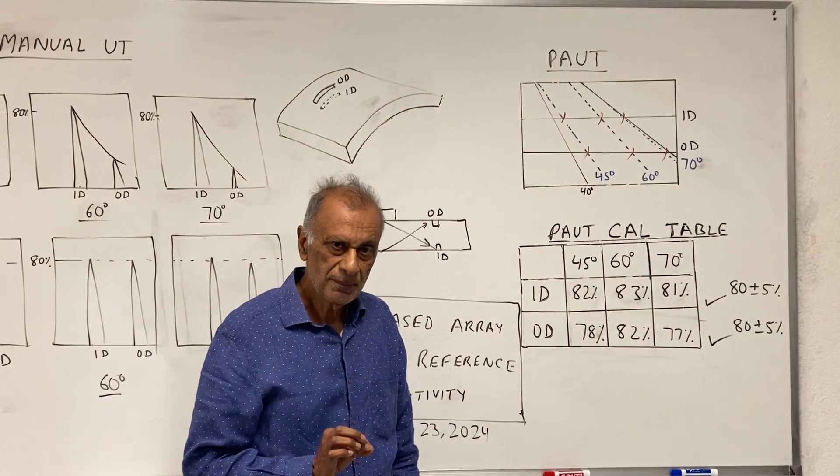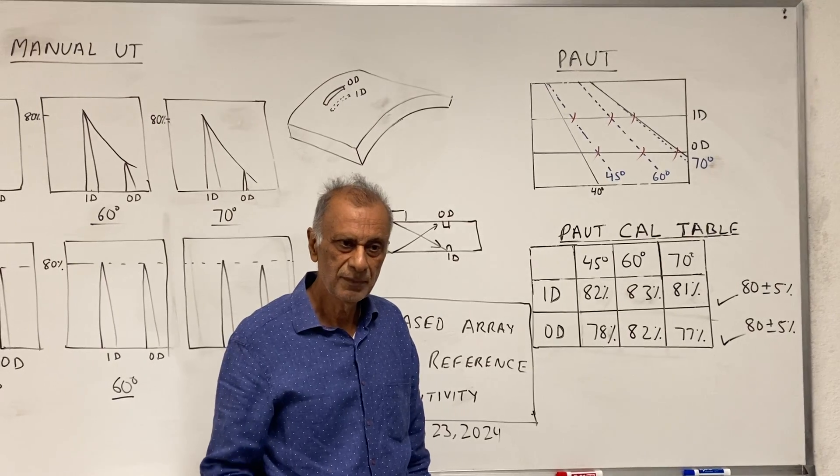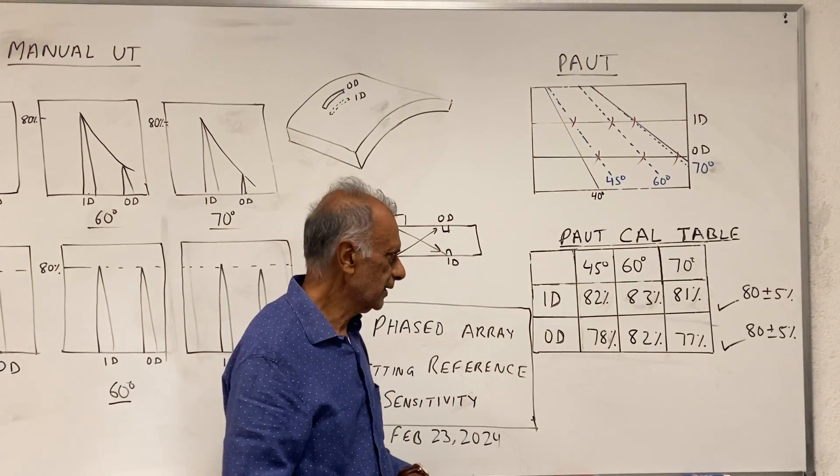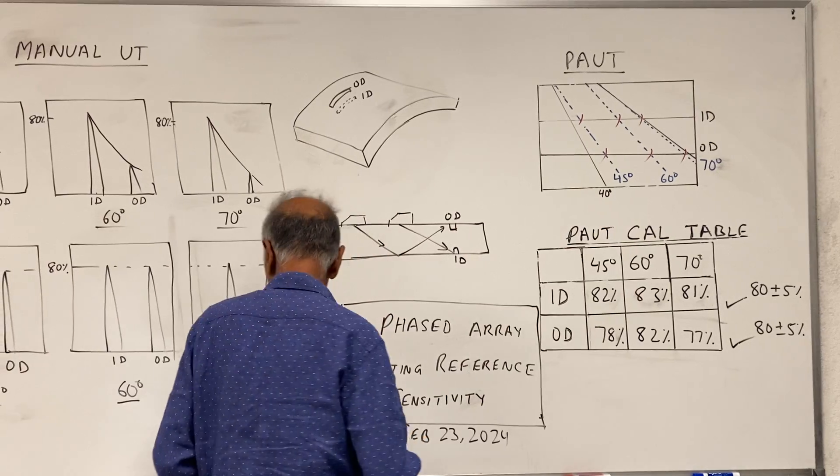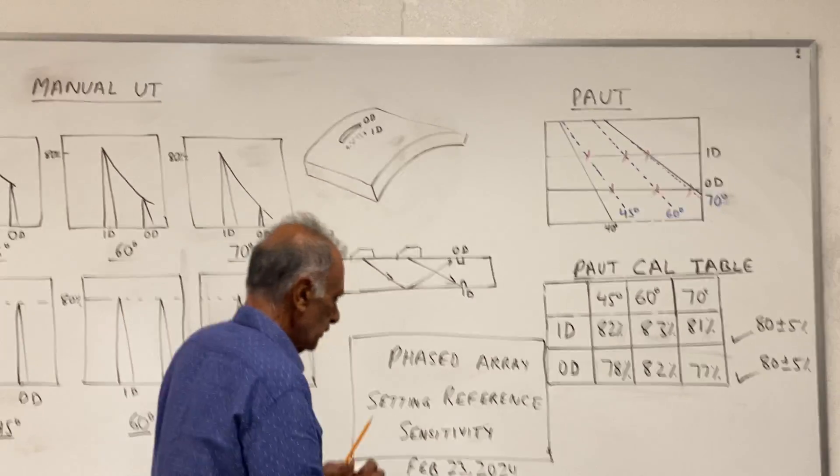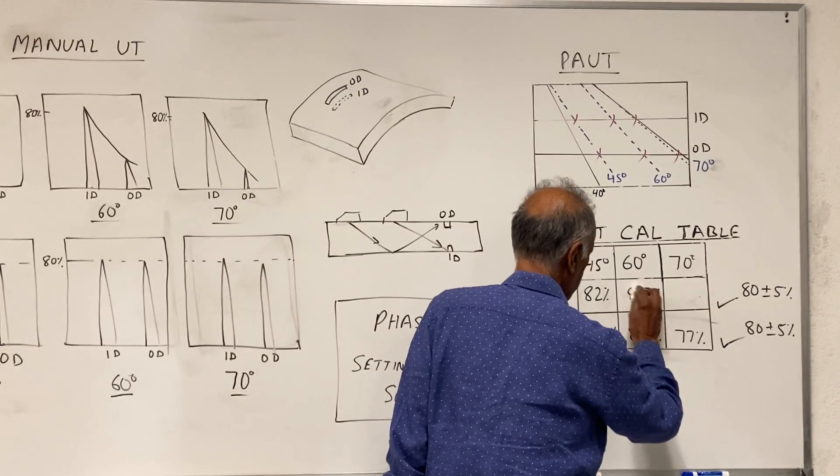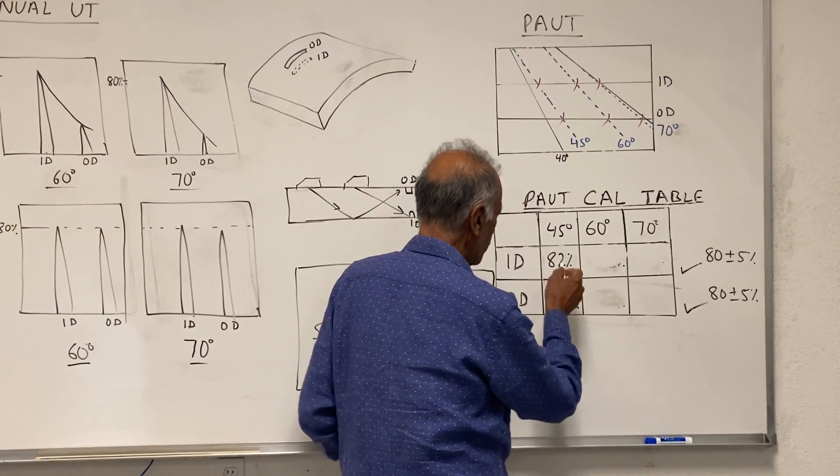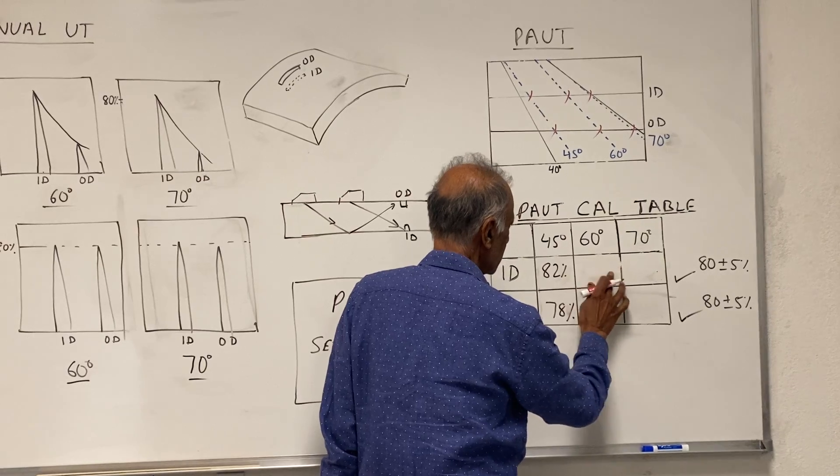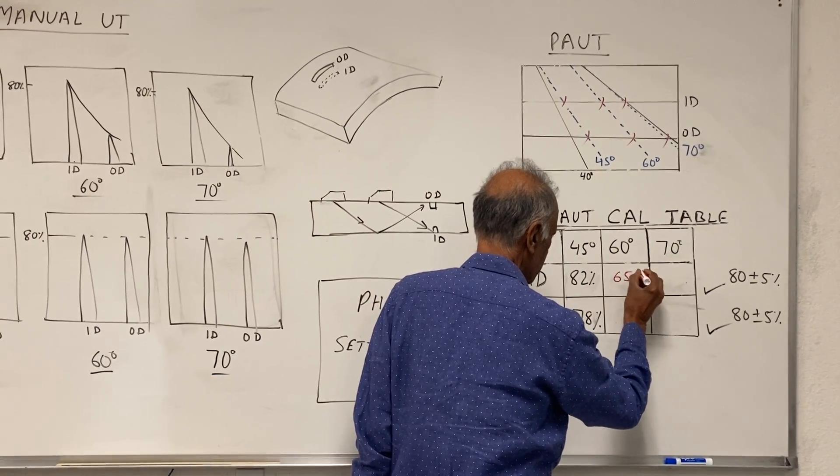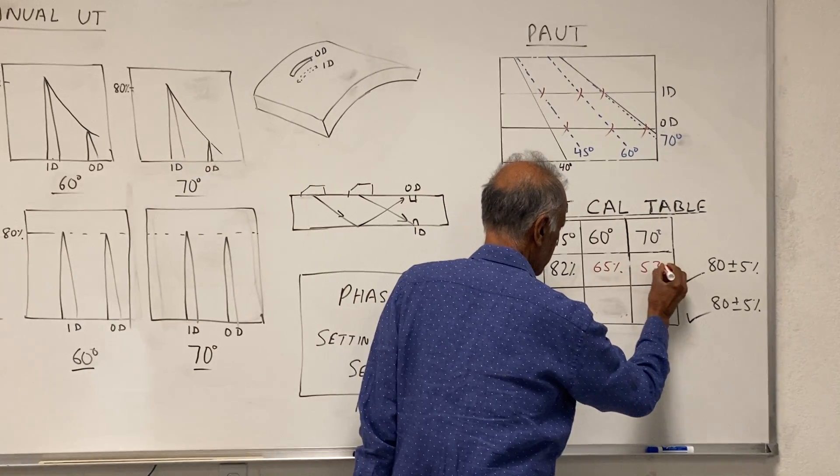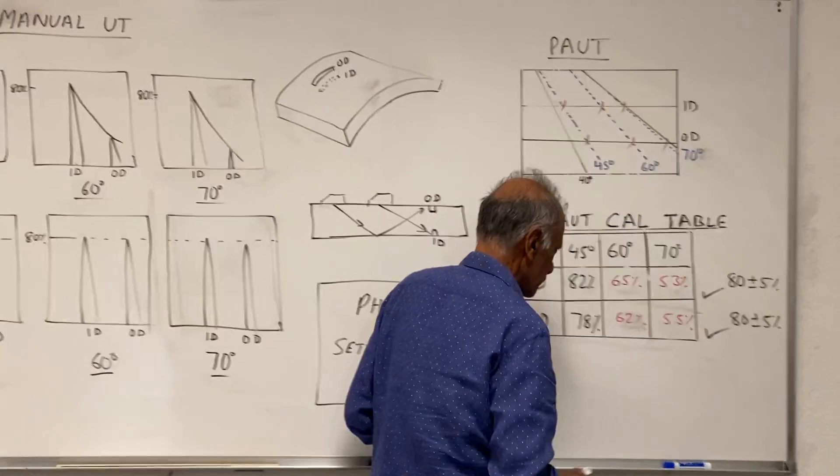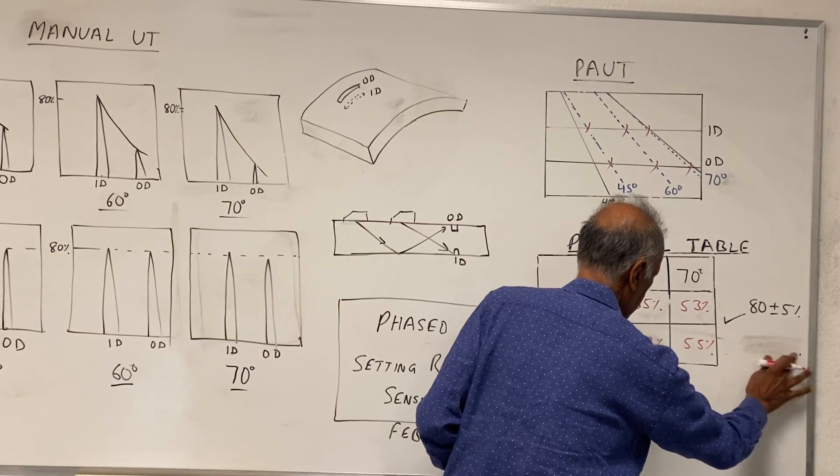Now what is not acceptable: if you do a calibration on side drill holes and then do a one point calibration on the notch, you will not get this result. If you do that, then what you will be getting is the following. At 45 degrees you will get 80%, but at 60 degrees you might get 65%, you might get 53%, and here you might get 62% and 55%. This one now is not acceptable.